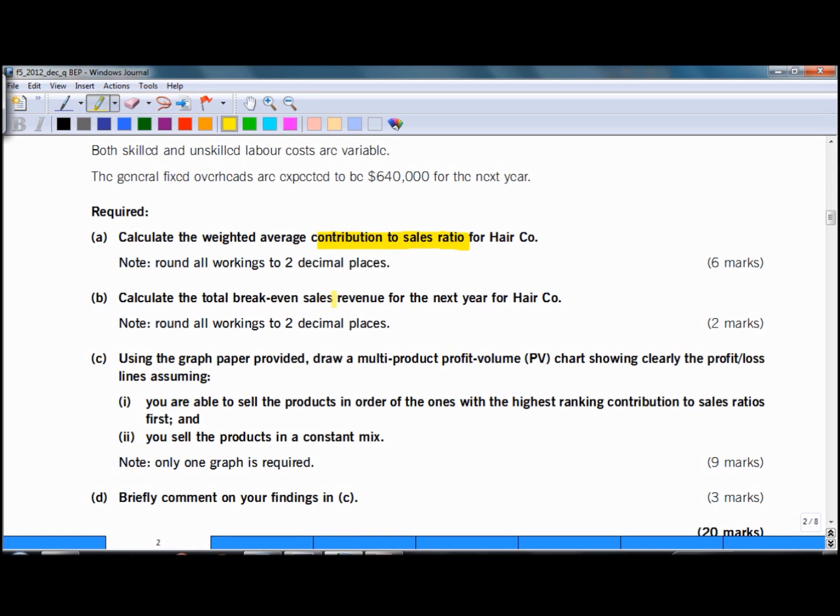Calculate breakeven sales revenues point, again a simple use of formula. And then in requirement C on the graph paper draw a profit volume chart. We have two options here where we need to do one graph where we sell the products in order of their highest ranking contribution to sales ratio, and in part 2 drawing as if it was a constant mix. In requirement D briefly comment on your findings.